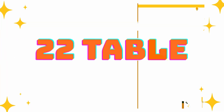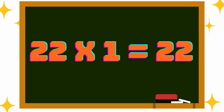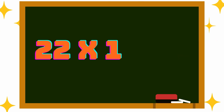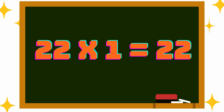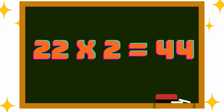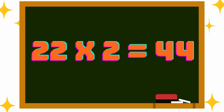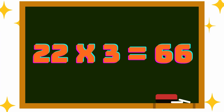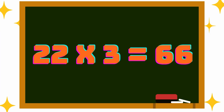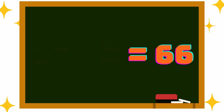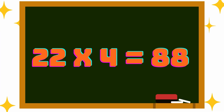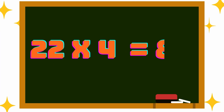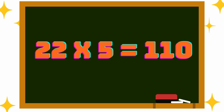Next one, 22nd table. 22 into 1 is 22, 22 into 2 is 44, 22 into 3 is 66, 22 into 4 is 88, 22 into 5 is 110.